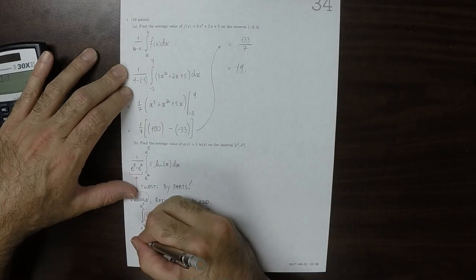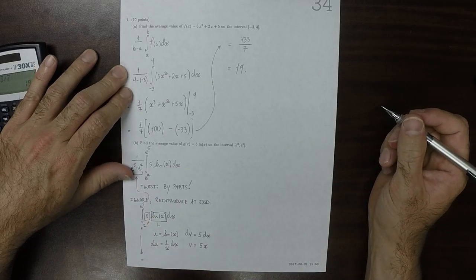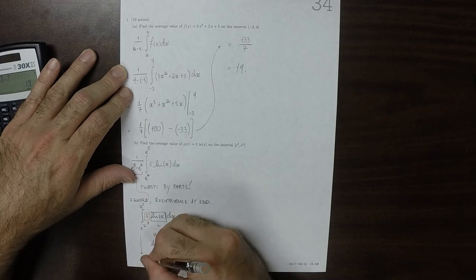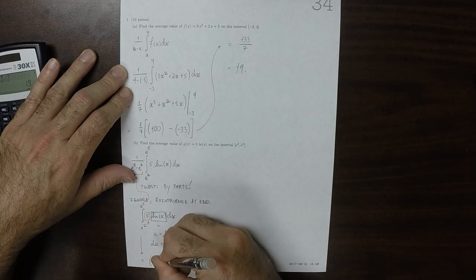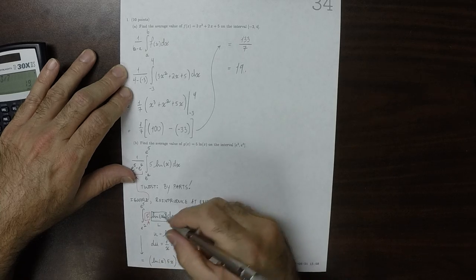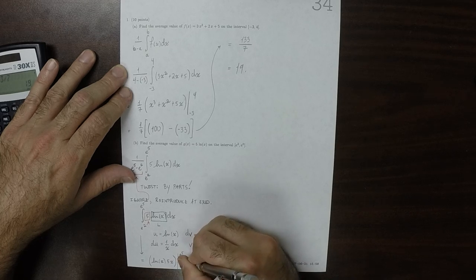And then doing that, the right-hand side of by parts is uv. So log of x times 5x. And then evaluated from e squared to e to the 5,